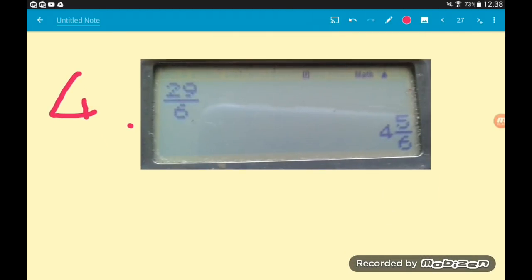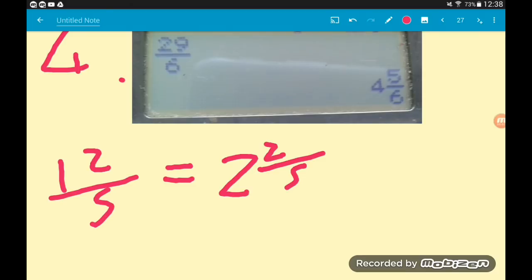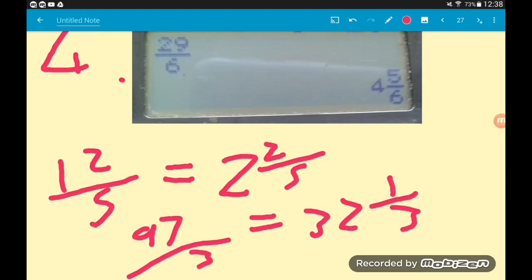Have a little practice with that. Make sure you can get 12 fifths as two and two fifths, and 97 thirds - make sure you can get that as 32 and one third. Make sure you can get those. We can also go the other way from a mixed number to an improper fraction, which we'll do next.